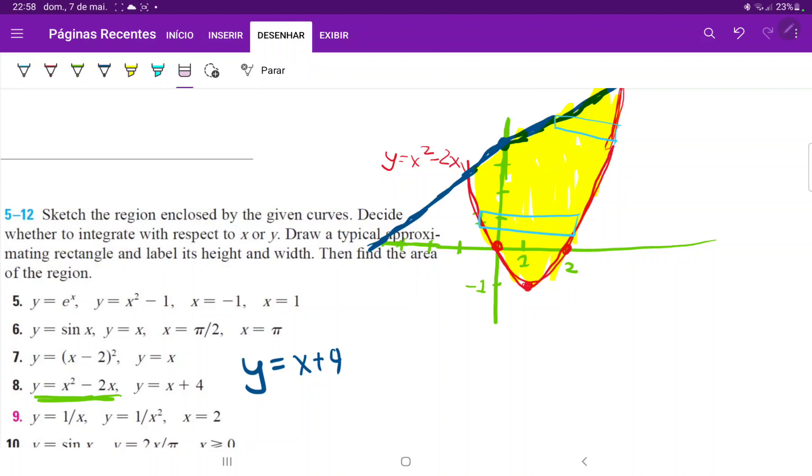So, instead of doing that, we will draw vertical rectangles. Because when we draw vertical rectangles, we do have the height, which will always be the blue line, no matter where we're drawing. And the lower boundary will always be the red line. So, we're almost ready to set up our integral.